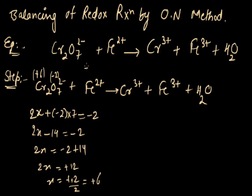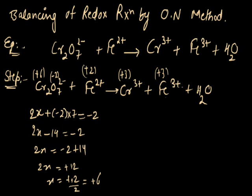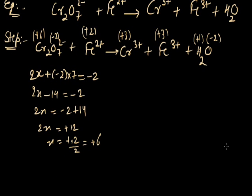The oxidation number of iron is plus 2 because a plus 2 charge is present on the ferrous ion. The oxidation number of chromium in the product is plus 3 because a plus 3 charge is present on the chromium ion. The oxidation number of iron in the product is plus 3. In the water molecule, the oxidation number of hydrogen is plus 1 and oxygen is minus 2. Now, Step 2: we identify the atoms undergoing a change in oxidation number.